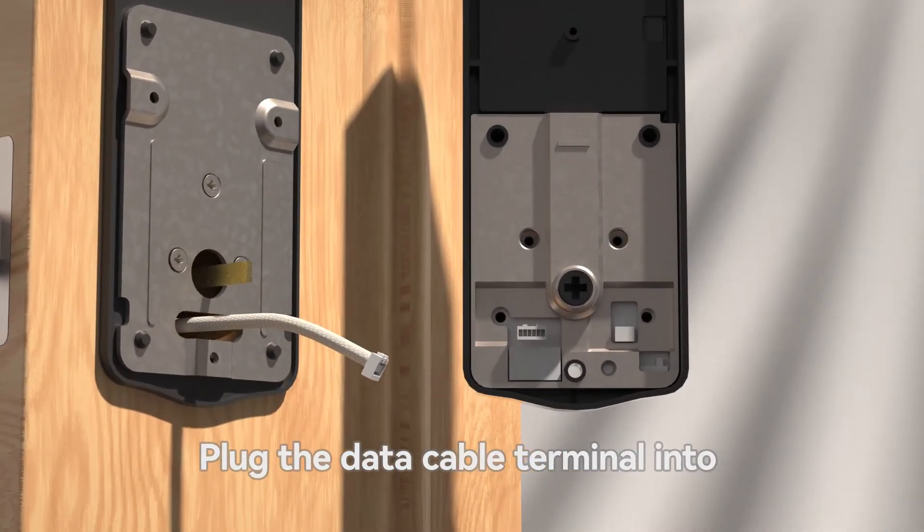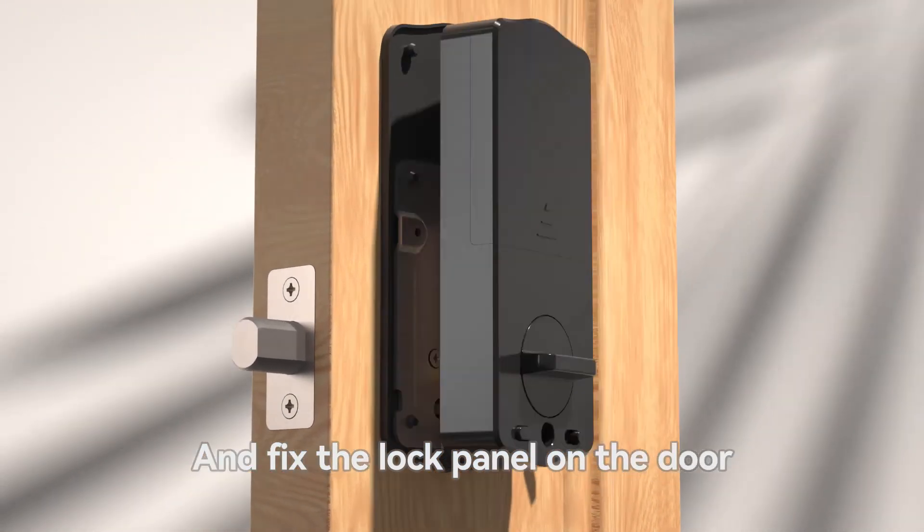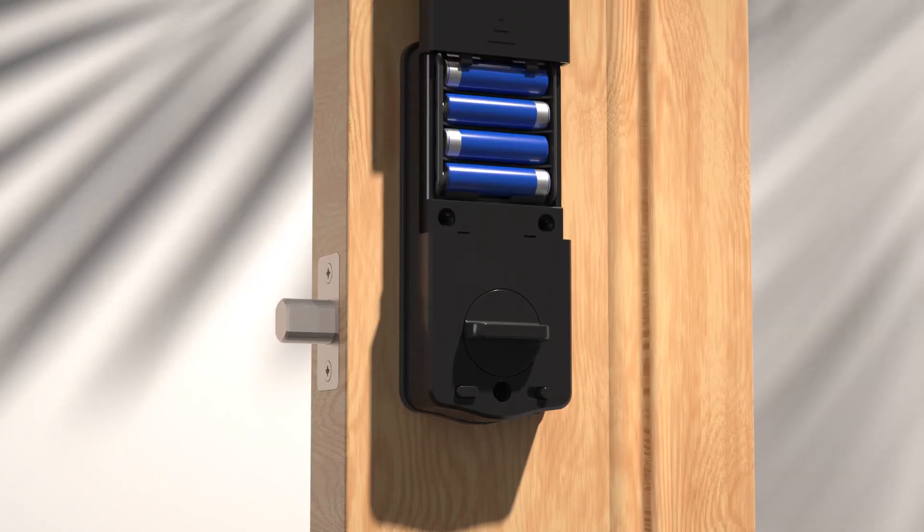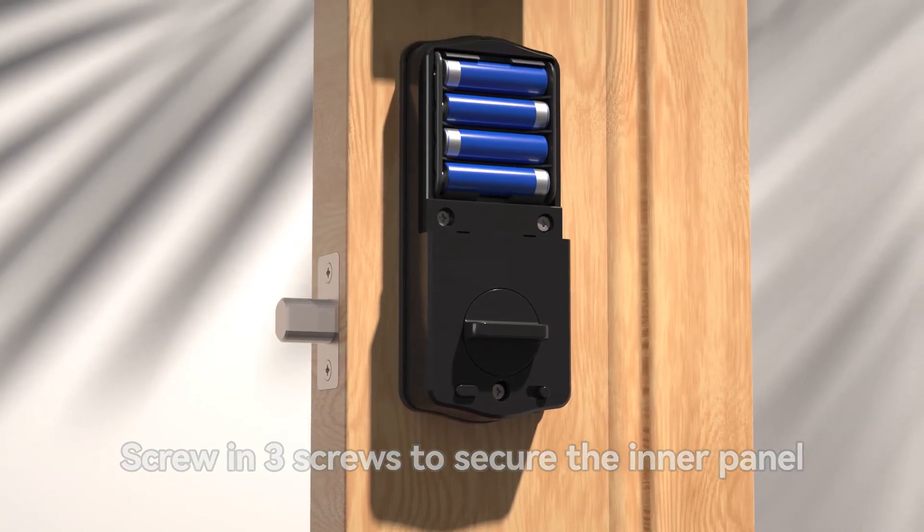Plug the data cable terminal into the socket on the inner panel and fix the lock panel on the door. Screw in three screws to secure the inner panel.